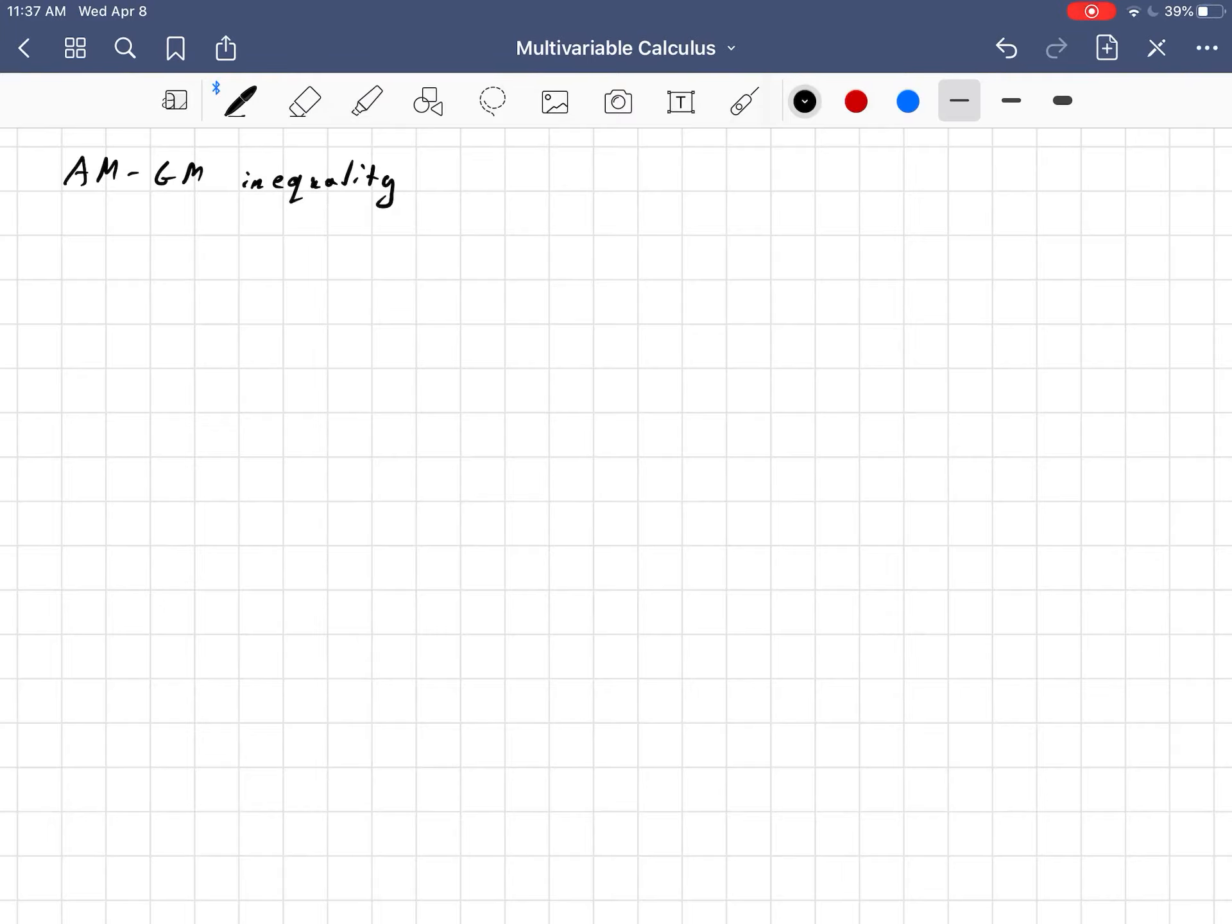The arithmetic mean is the one you're most familiar with. That's just taking the numbers, adding them up, and dividing by the number of numbers. In other words, a sub 1 plus dot dot dot plus a sub n all over n. That's an n, not an m. I'll call it the AM.